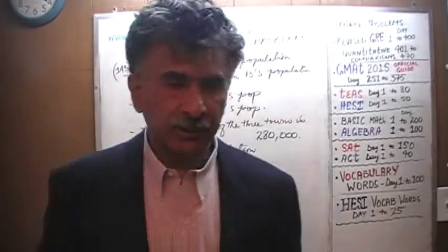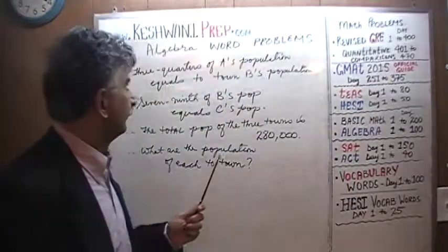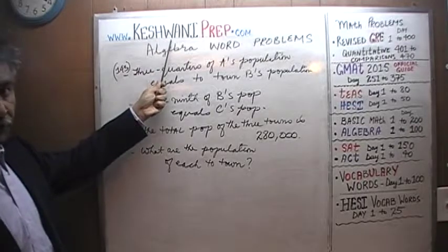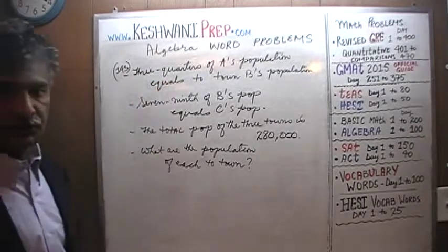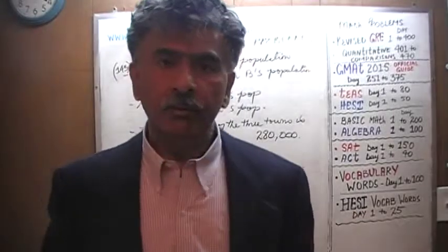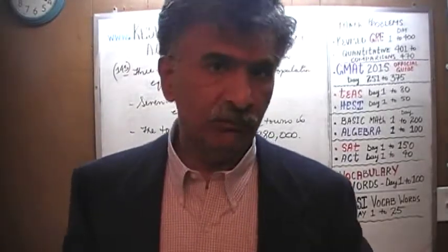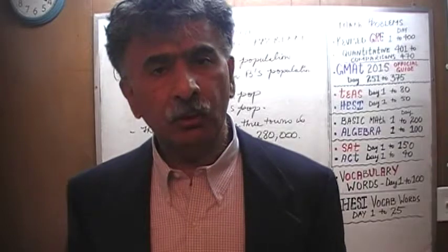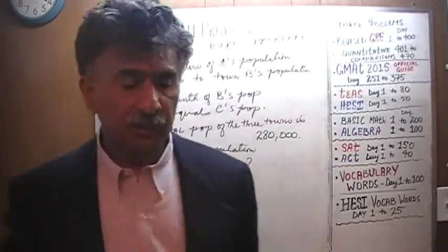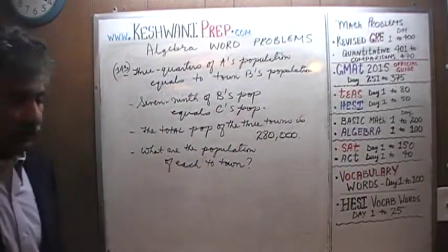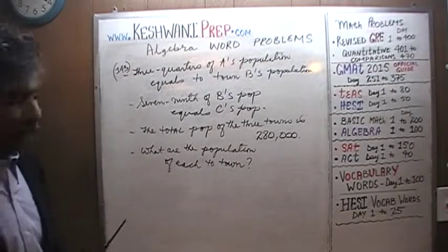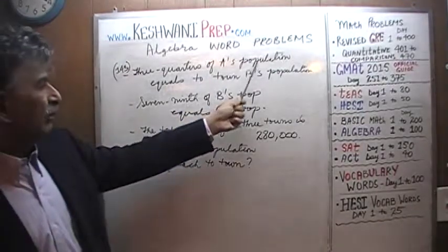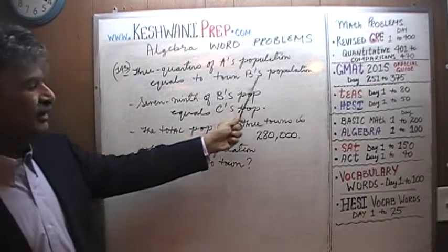Hello, my name is Kishwani — that's K-E-S-H-W-A-N-I — Kishwani. We are here because we want to learn how to solve algebra word problems. Today we'll do problem number 143. As you can see, it's already on the blackboard. Let's take a look at it, shall we? We are told that three quarters of town A's population equals town B's population.